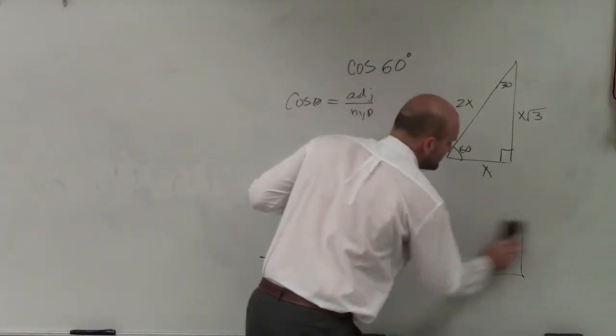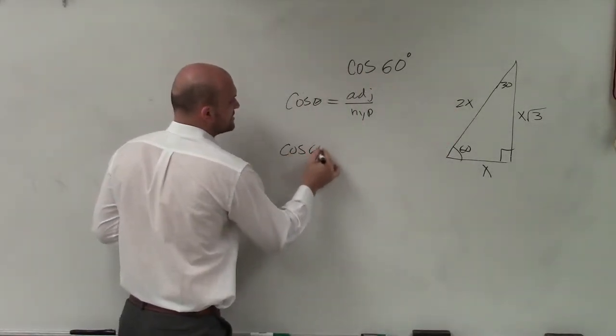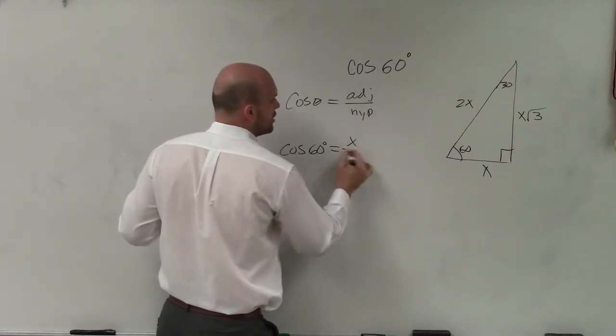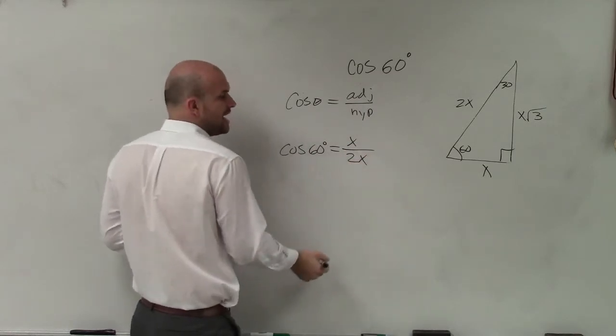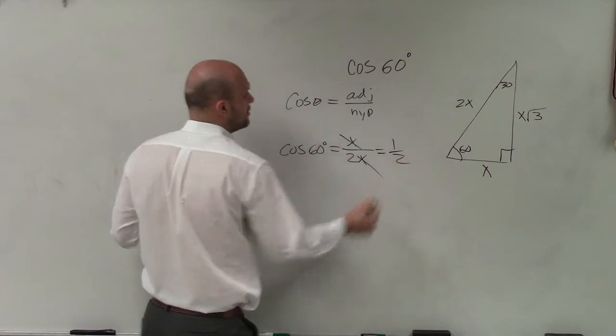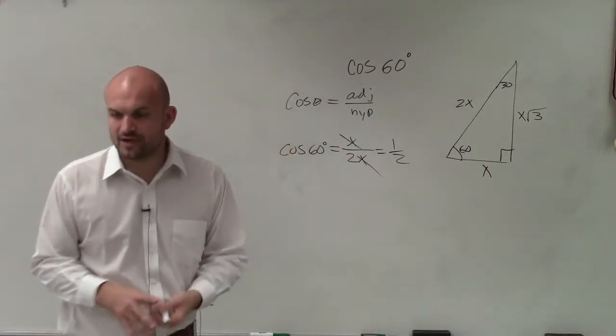So if I use my value here, I'll say now the cosine of 60 degrees is equal to the adjacent side, which is x, over my hypotenuse, which is 2x. Now, you can see that the x's divide out. And I'm just left with 1 half. So the cosine of 60 degrees is equal to 1 half.